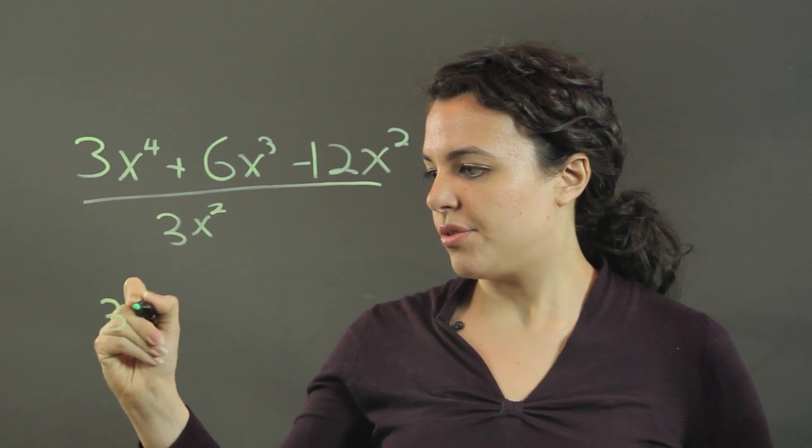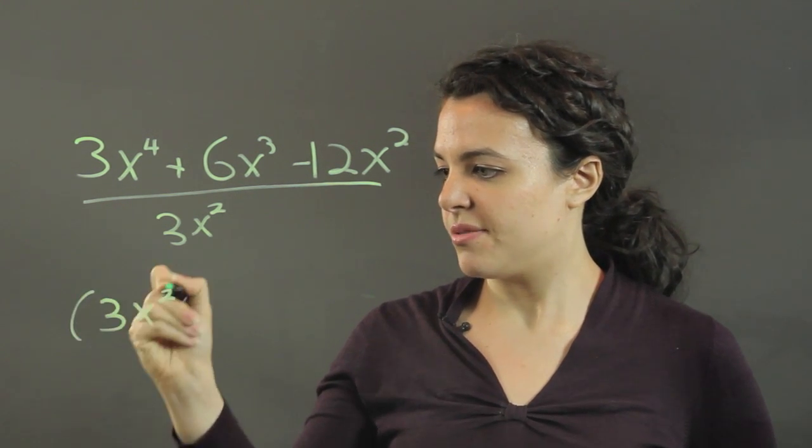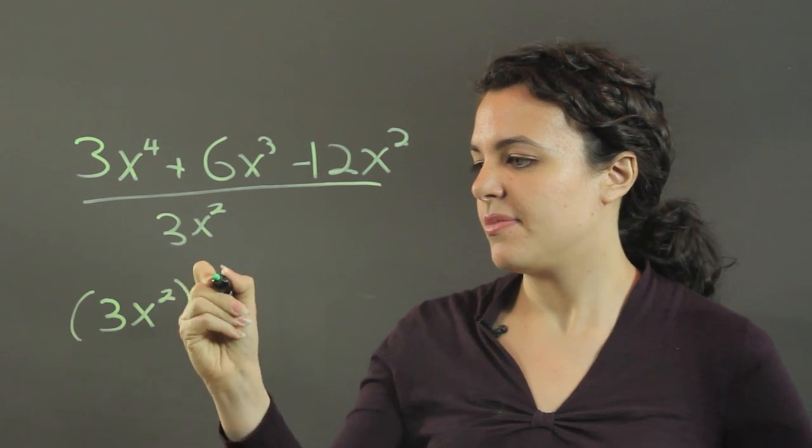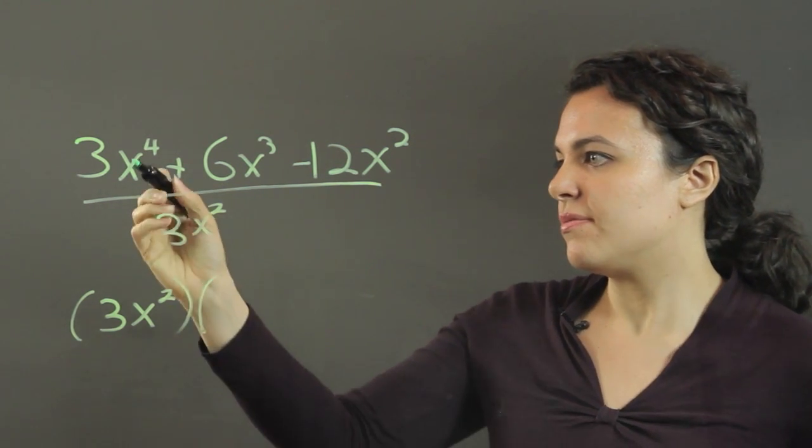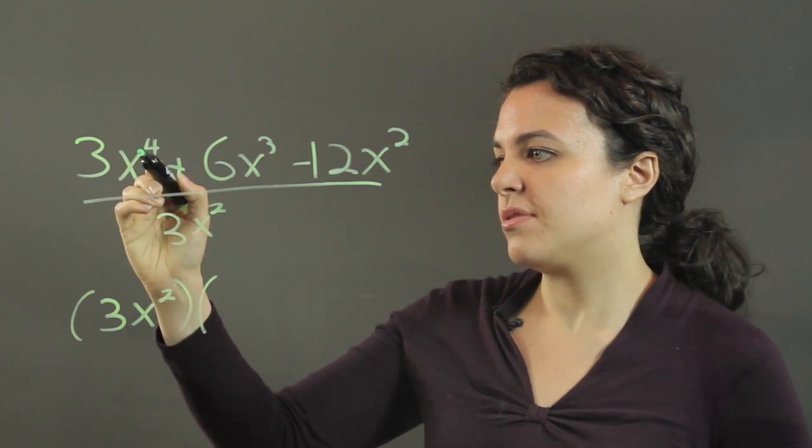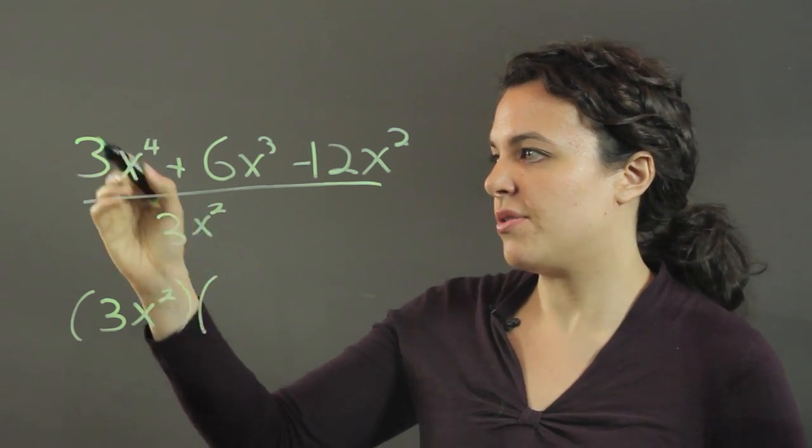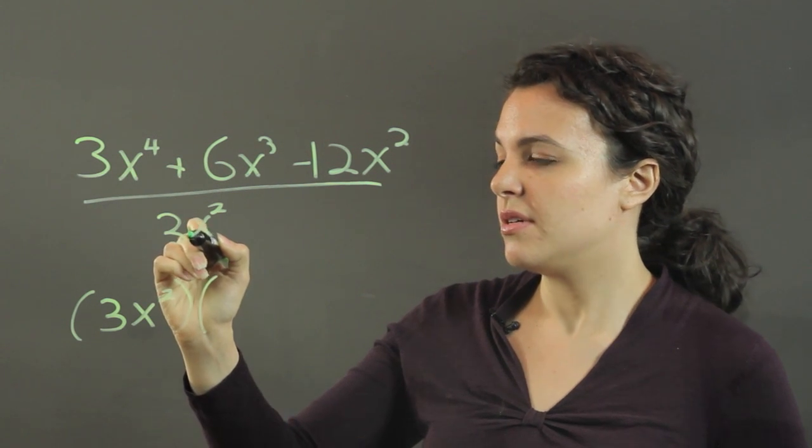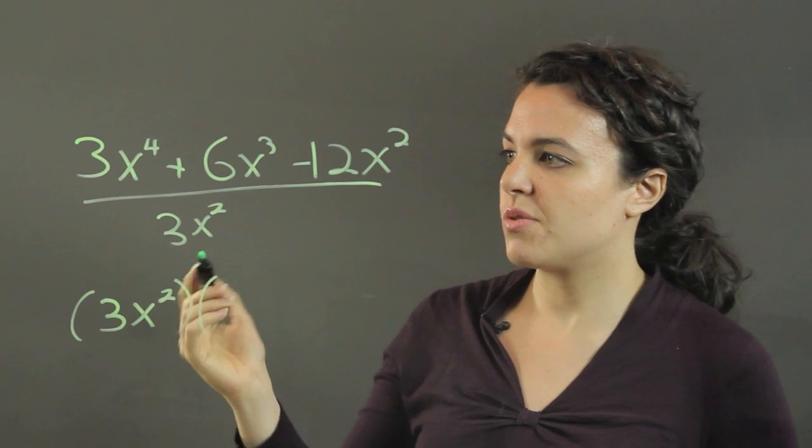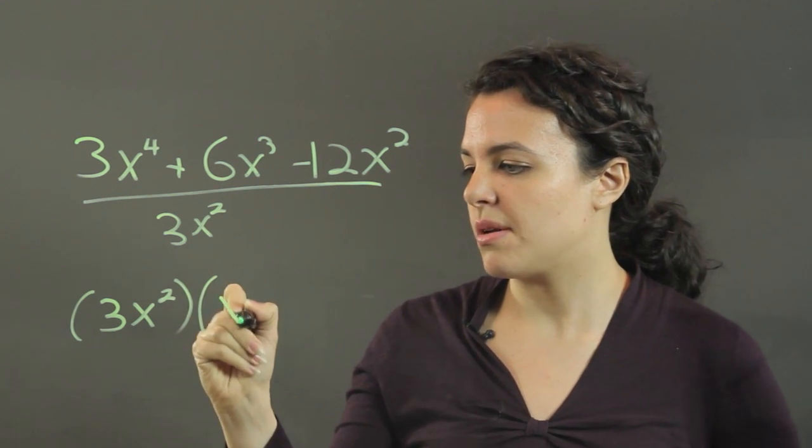And you're going to get your 3x squared out in the front, because it doesn't disappear. And here you get 3x to the fourth divided by 3x squared. Our 3's cancel out, and x to the fourth over x squared is just x squared. So that's what I'm left with here.